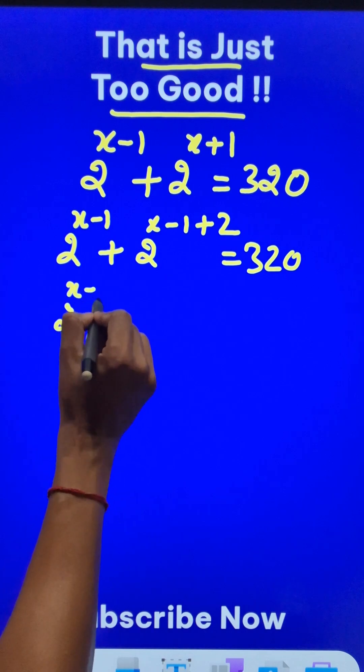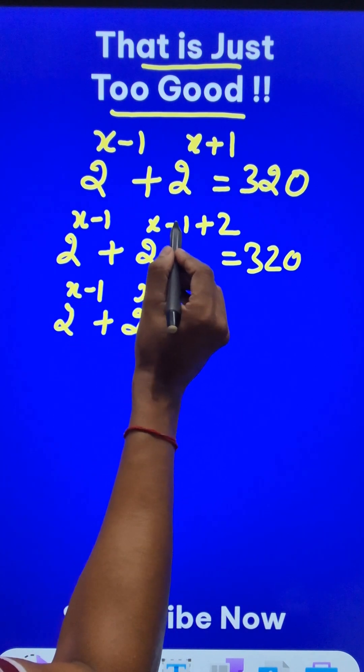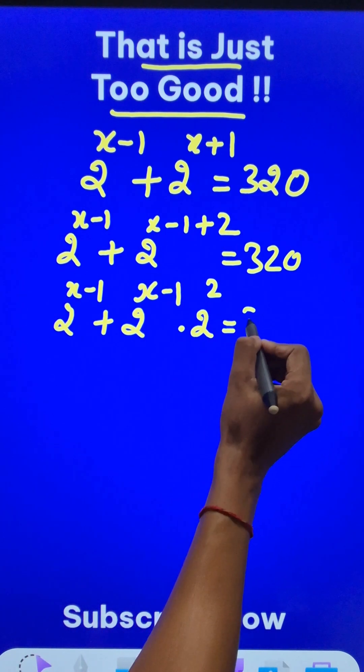Now 2 raised to power x minus 1 plus, you know the laws of exponents right, so I can write 2 raised to power x minus 1 and plus 2 means times 2 raised to power 2. And now what's the wonder?